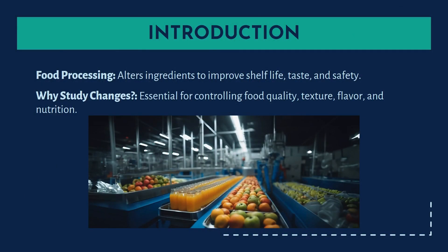What is food processing? It is a process in which ingredients are altered to improve shelf life, taste and safety. But why are we studying these changes? It is essential for controlling food quality, texture, flavor and nutrition. We as food technologists should study these changes in order to improve shelf life, flavor, texture and nutrient value of food products.